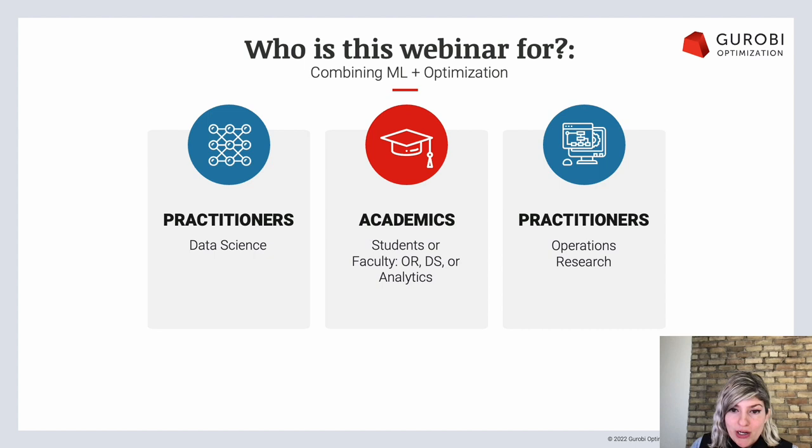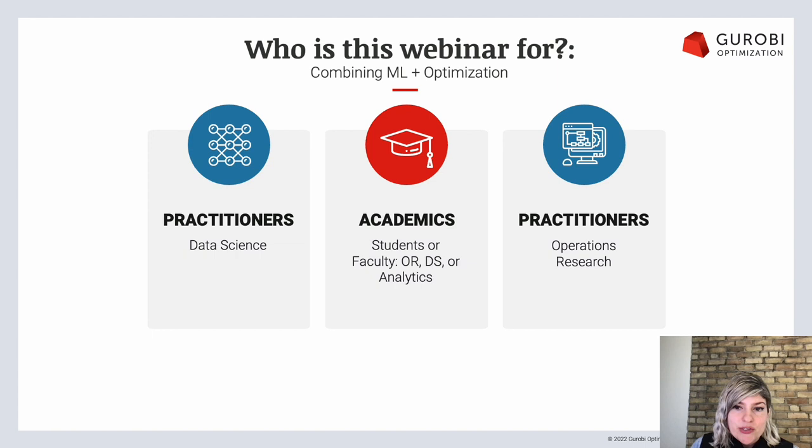If you're a data scientist who's interested in learning more about optimization, the examples we're going to present might help you understand how to add optimization to your machine learning model to help with complex decision making. If you're an academic user still learning optimization, these are digestible examples of how optimization can touch day-to-day life — see how to create tools that blend the predictive power of data science with the decision-making power of optimization. And finally, if you're an experienced optimization practitioner, these are easy-to-present examples that could be the start of a conversation with your colleagues.